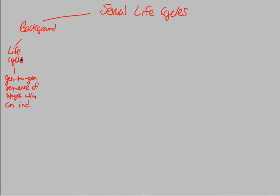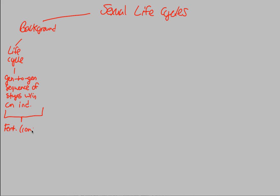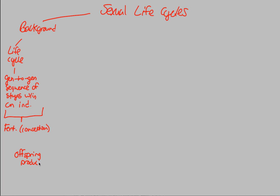When we look at a life cycle within any organism, this is going to be the generation-to-generation sequence of stages within that individual. This is going to encompass and end with the idea of fertilization — more specifically, the idea of conception. Conception is the start of life, and that start of life happens at the moment of fertilization. Once that has occurred, you're going to create offspring. That offspring will then continue this cycle of life, fertilizing with another offspring to conceive yet another offspring.